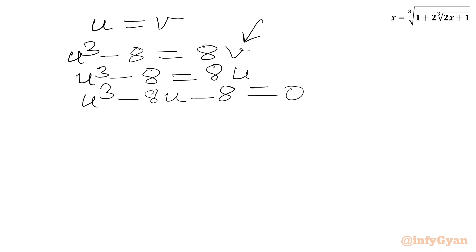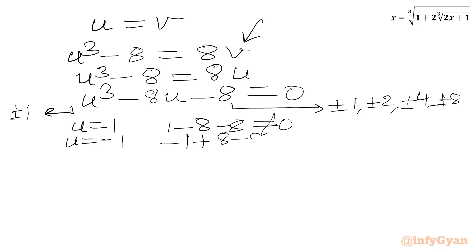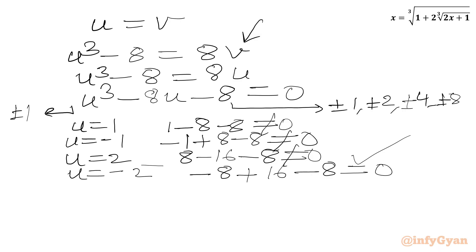Now we use the rational root theorem and synthetic division. The eligible factors of the constant 8 are plus or minus 1, plus or minus 2, plus or minus 4, plus or minus 8. The leading coefficient is 1, so we test plus or minus 1. Testing U equal to 1: 1 minus 8 minus 8 does not satisfy. Testing U equal to minus 1: minus 1 plus 8 minus 8 does not satisfy. Testing U equal to 2: 8 minus 16 minus 8 does not satisfy. Testing U equal to minus 2: minus 8 plus 16 minus 8 equals 0 — yes, this satisfies. So U equal to minus 2 is our base solution for this cubic equation.